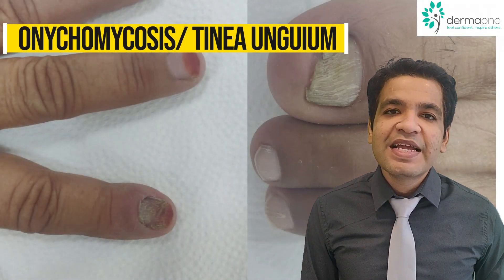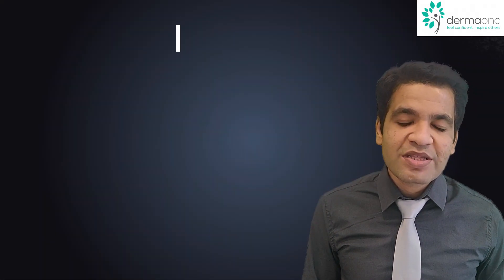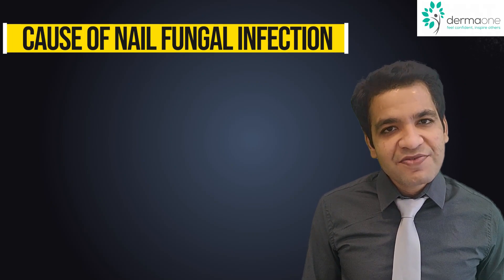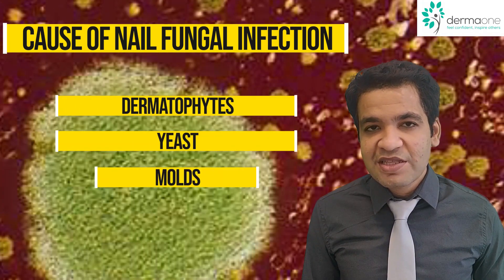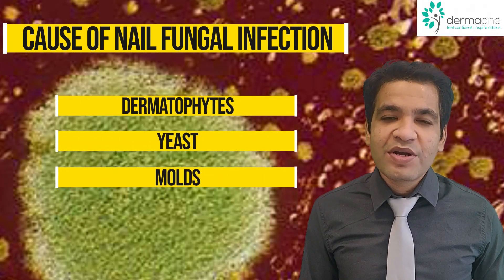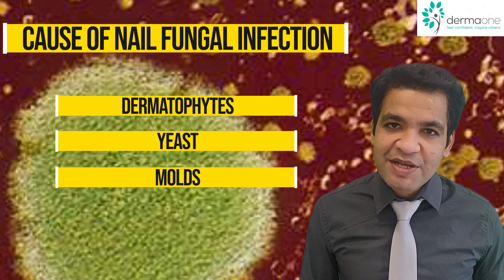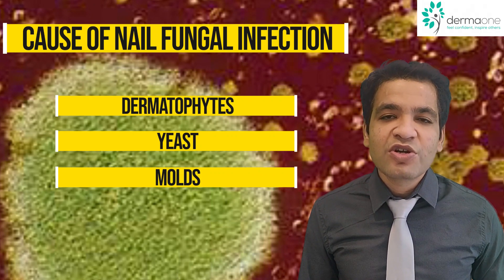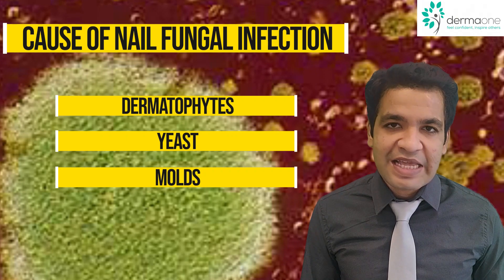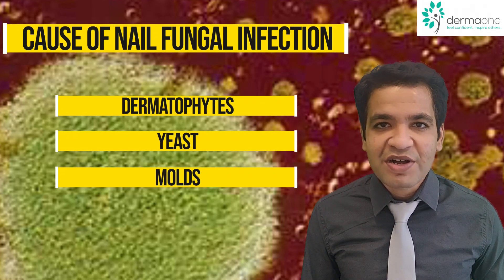Nail fungal infection, also known as onychomycosis or tinea ungum, it can affect your fingernails as well as your toenails. This infection can be caused by either dermatophytes, yeasts, or moulds — three different types of fungi. It is important to find out which fungus exactly is infecting your nail because the treatment depends on it. There are different medicines which kill these different types of fungi. So your doctor may do a culture sensitivity test from your nail to find out the exact nature of the fungus and the medicines which can be used to kill it.